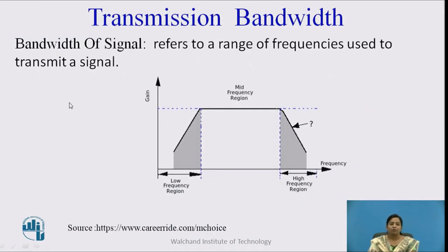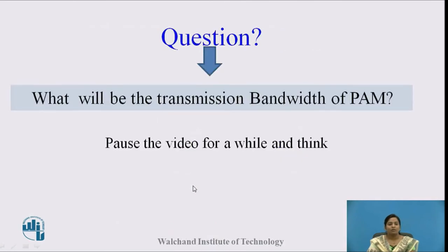The transmission bandwidth of any signal generally refers to the range of frequencies used to transmit the signal, or we can say it is the difference between the higher frequency and the lower frequency. We have studied the PAM signal and what transmission bandwidth means, so the question is: what will be the transmission bandwidth of PAM? Pause the video for a while and think.